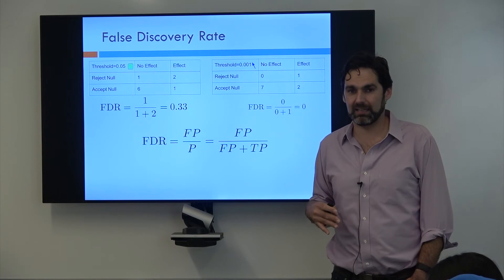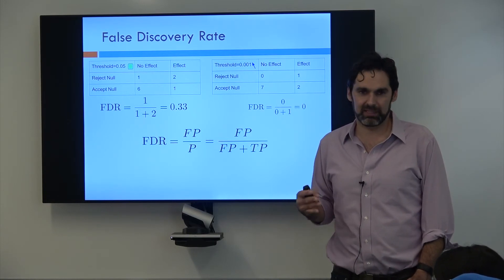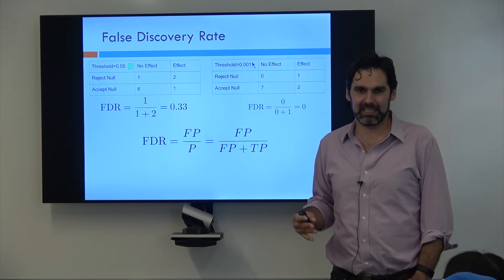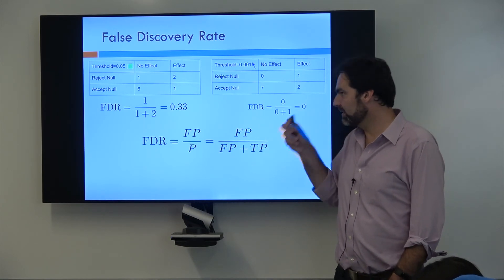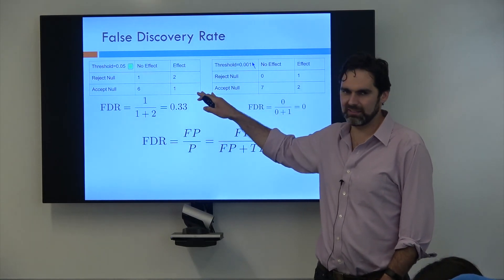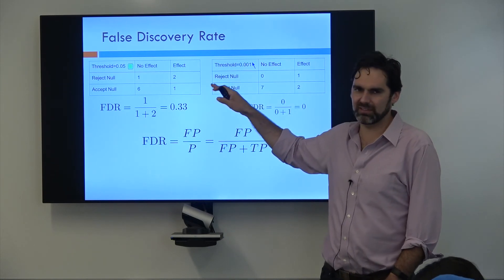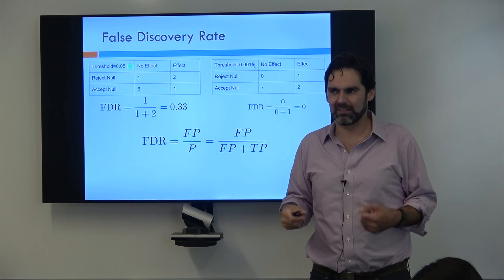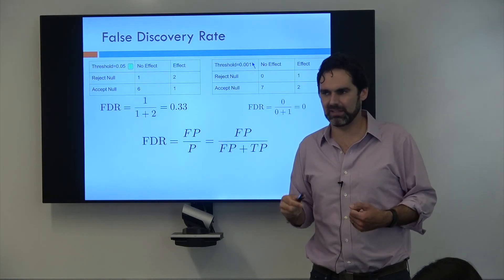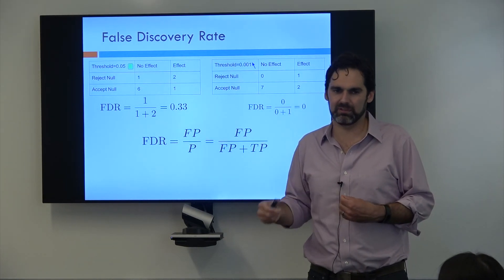So when people say we did like FDR control or like Benjamini-Hochberg, like FDR control or anything like that, what they're saying is that they took a whole bunch of their discoveries and they controlled their threshold in such a way so that when they reported their list of discoveries, they controlled for themselves how many of those discoveries would be false positives. Now let's go ahead and have a look at the effects.